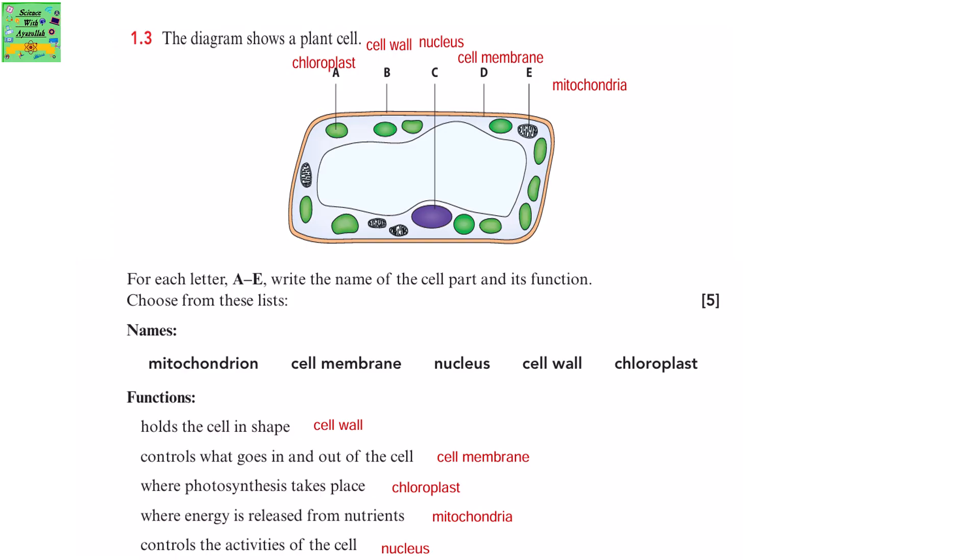This diagram shows a plant cell. Label parts A to E. A is chloroplast, B is cell wall, C is nucleus, D is cell membrane, and E is mitochondria. Next, you need to name the cell part to its function.